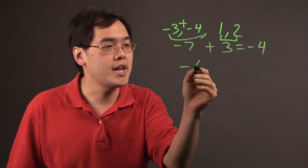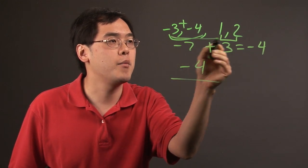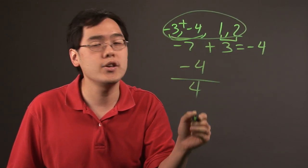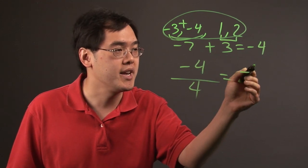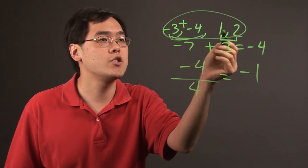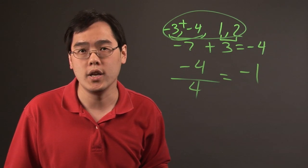And then you can take that negative 4 and divide by how many values there are, which are four values, and then you go from there. So negative 4 divided by 4 is going to be negative 1. So the average of these four values is going to be negative 1.